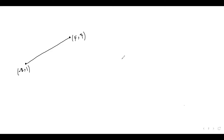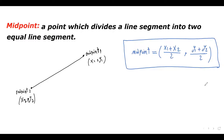In this video, you will learn how to use the midpoint formula to find the midpoint of a line, and also how to use it to find one endpoint if the midpoint and the other endpoint of the line are given. Let's start with the definition of the midpoint. The midpoint is a point which divides a line segment into two equal line segments.